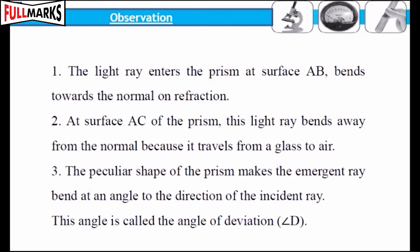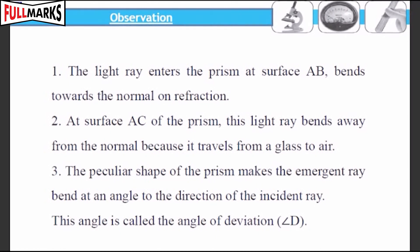the light ray bends away from the normal because it travels from glass to air. The peculiar shape of the prism makes the emergent ray bend at an angle to the direction of the incident ray. This angle is called the angle of deviation.